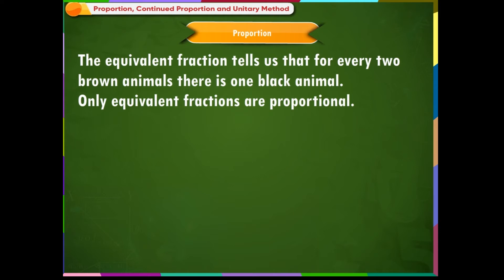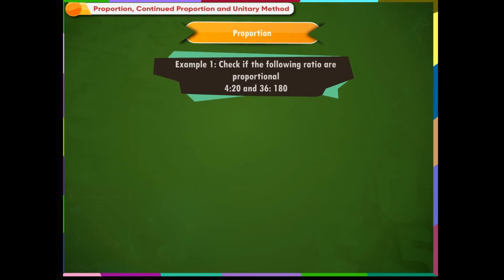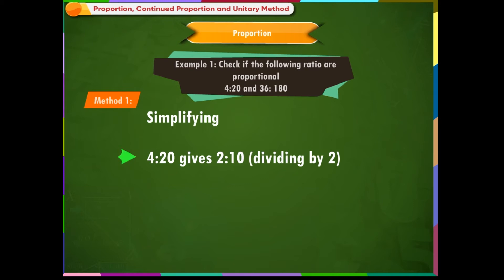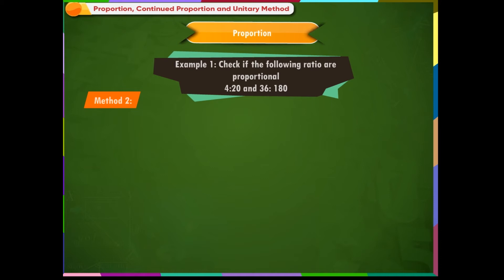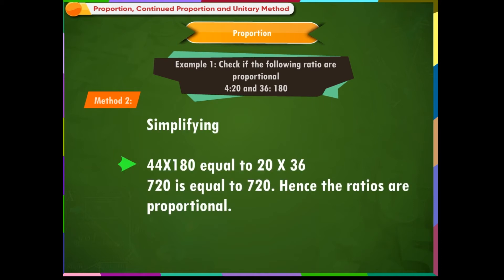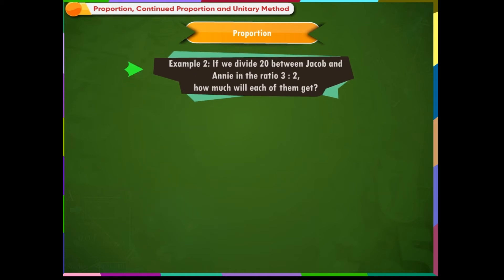Example 1: Check if the following ratios are proportional — 4:20 and 36:180. Method 1 (by simplifying): 4:20 simplifies to 2:10, and 36:180 also simplifies to 2:10, so the given ratios are proportional. Method 2: 4 × 180 = 20 × 36 → 720 = 720. Hence the ratios are proportional.